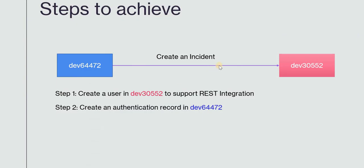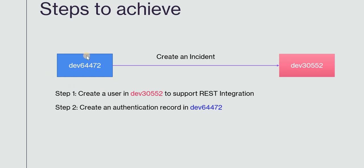The next step is to create an authentication record in instance number 1, dev 64472. This authentication record will store the user credentials of instance number 2, and they will be used to create an incident there. That is why we need to create this authentication record in instance number 1, so I will go there now.